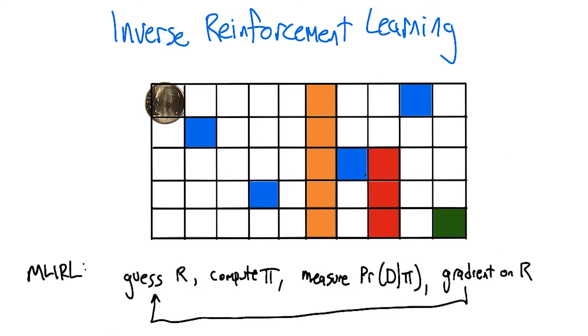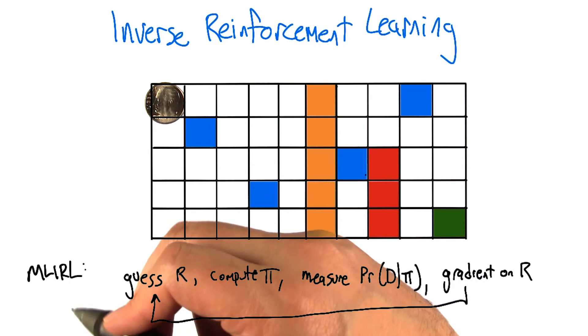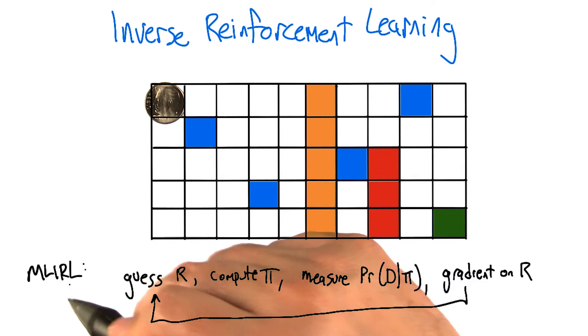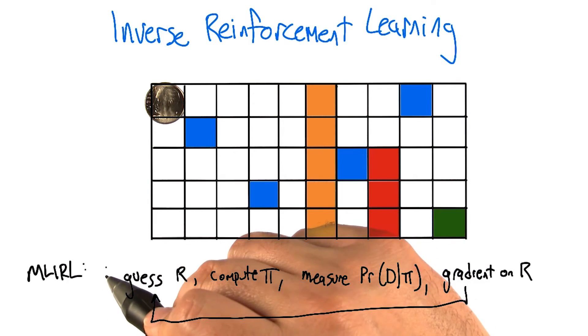Obviously as we're sitting here we can't really get into the details of the algorithm, but just to give you a hint of the form of this, there's an algorithm that I worked on called maximum likelihood inverse reinforcement learning, but there's a whole bunch of different algorithms. This one I happen to understand the best because I helped make it up.